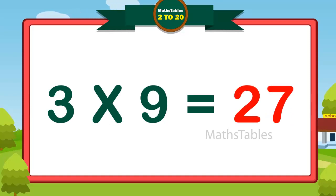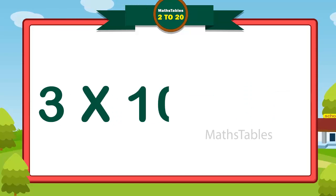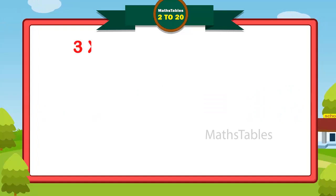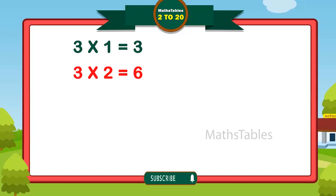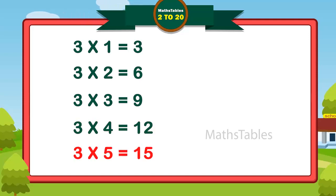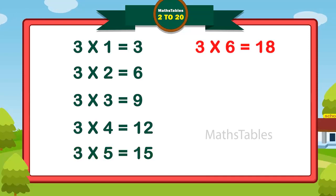Three tens are thirty, three tens are thirty. Three ones are three, three ones are three. Three twos are six, three twos are six. Three threes are nine, three threes are nine. Three fours are twelve, three fours are twelve. Three fives are fifteen, three fives are fifteen. Three sixes are eighteen, three sixes are eighteen.